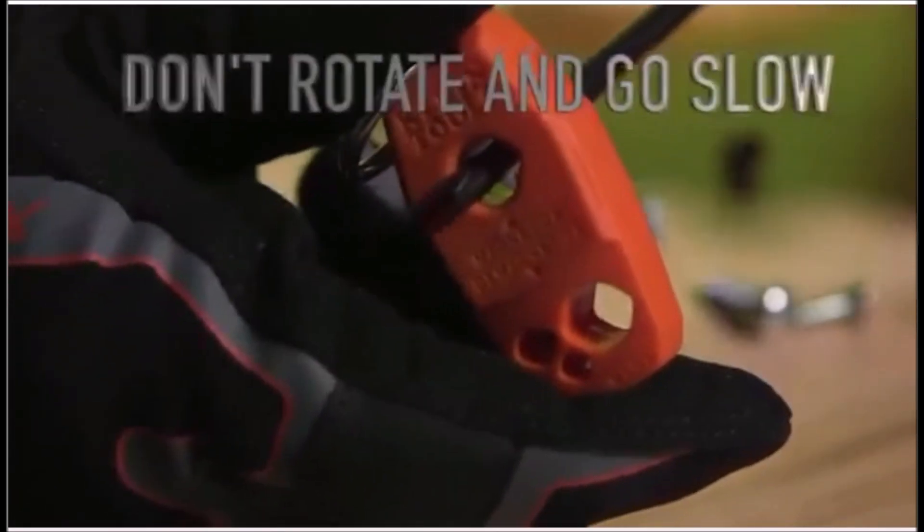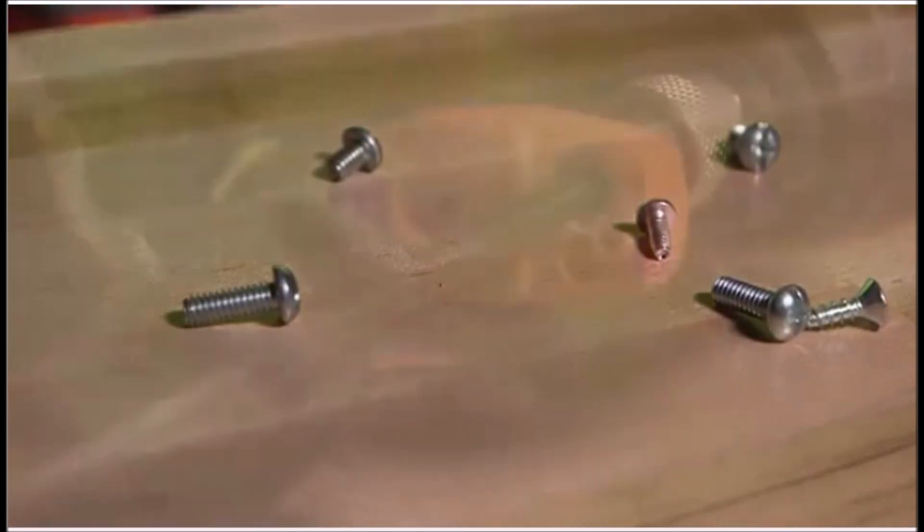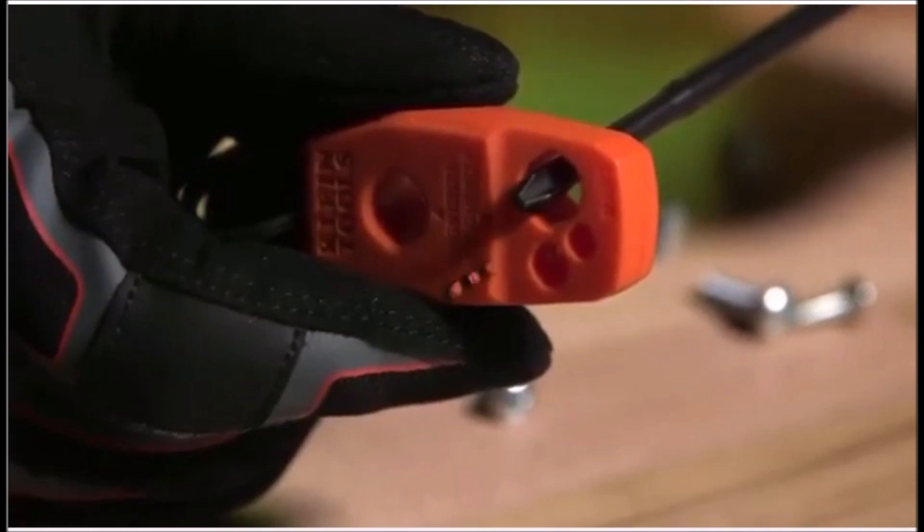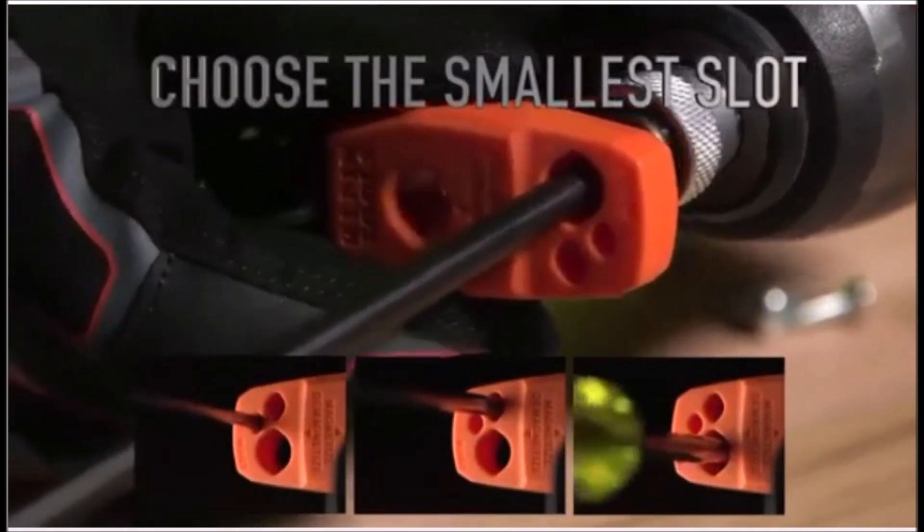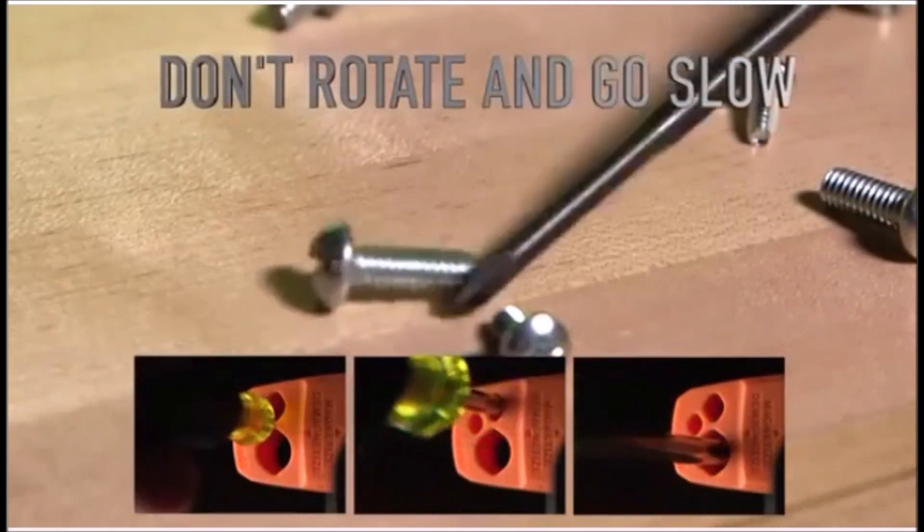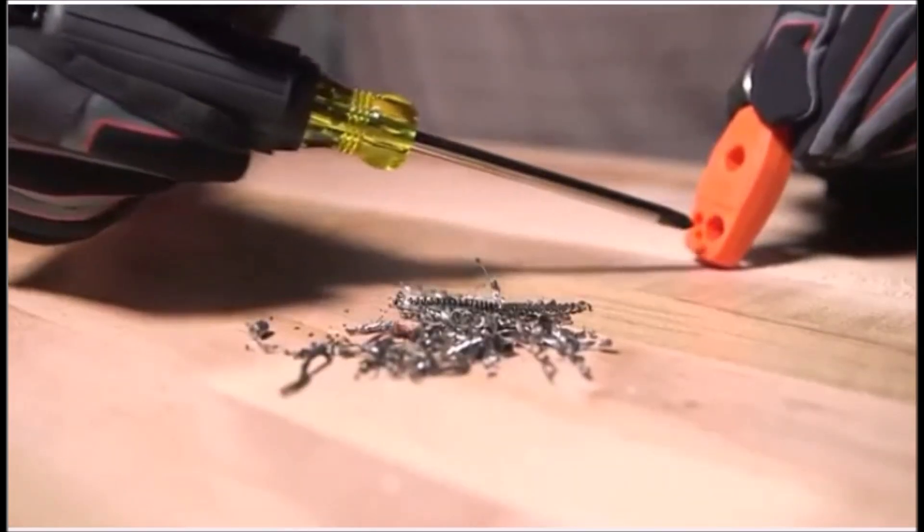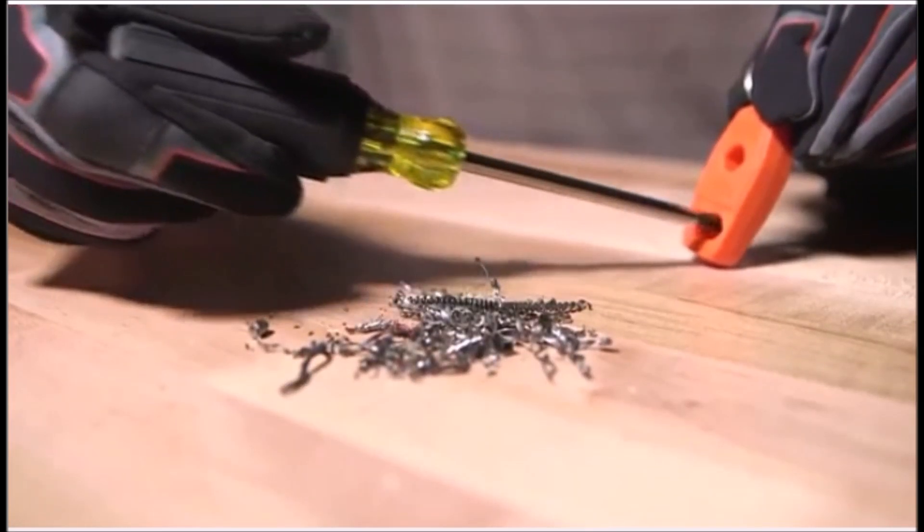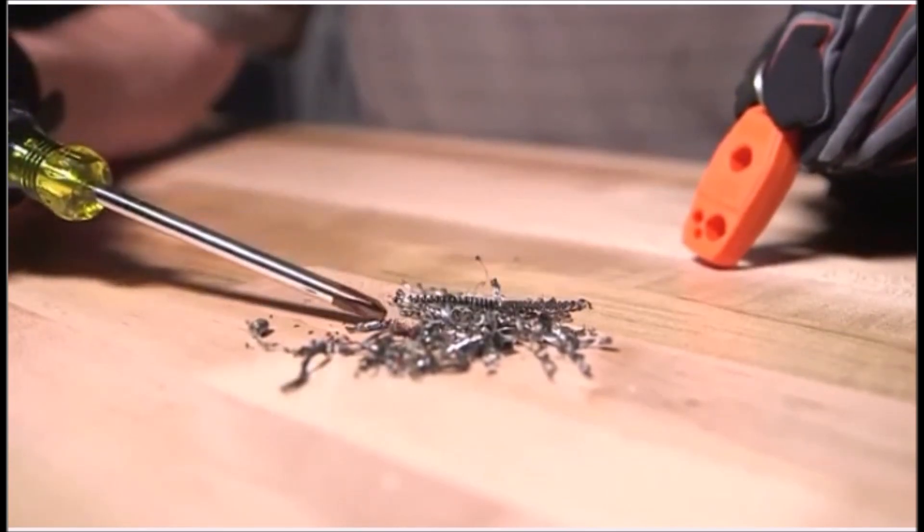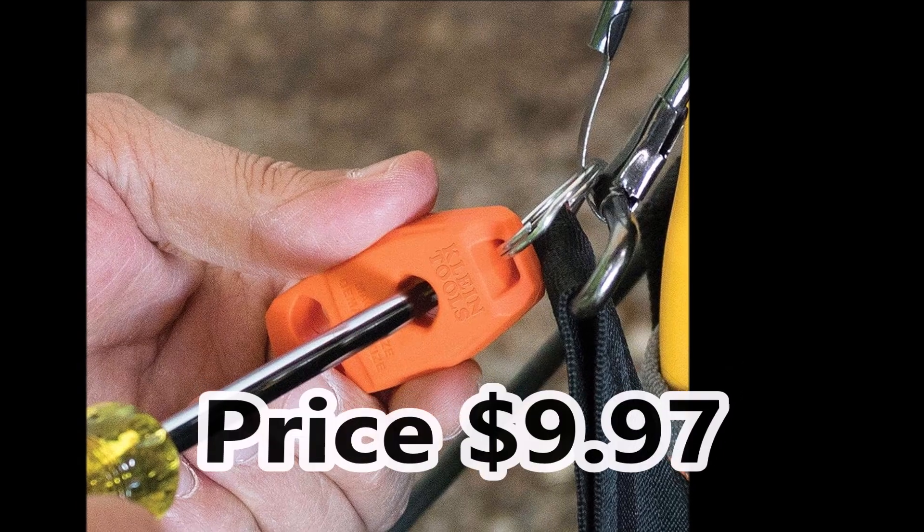It does not need batteries or charging, so it's always ready to use. A built-in stainless steel keyring makes it easy to clip onto a tool bag or backpack, keeping it close at hand. The magnet strength is reliable and the swipe action is smooth. Whether installing outlets, working on panels, or handling small hardware, this tool helps improve control and reduce dropped screws. It's compact, lightweight, and built for quick access and long-term use. A practical addition to any tool kit.